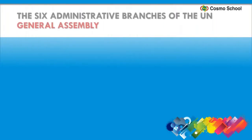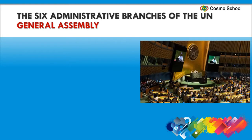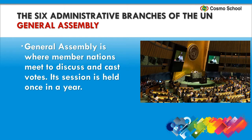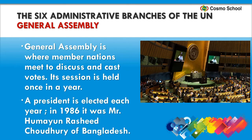Now let's learn about the six administrative branches of the UN. The General Assembly is where member nations meet to discuss and cast votes. Its session is held once a year and a president is elected each year. In 1986, it was Mr. Humayun Rashid Choudhuri of Bangladesh.